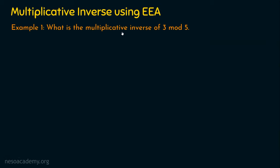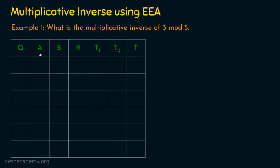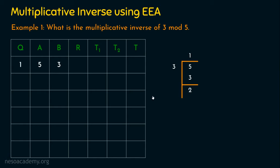Example number 1: What is the multiplicative inverse of 3 mod 5? As mentioned in the previous lecture, a multiplicative inverse exists only when the two values are relatively prime to each other. Since 3 and 5 are relatively prime, we can definitely say there exists a multiplicative inverse. The solution uses 7 columns: Q, A, B, R — from Euclid's algorithm — plus T1, T2, and T. A should take the bigger value, so 5 is placed in A and 3 in B. Performing A mod B: 5 divided by 3 gives quotient 1 and remainder 2, so we fill 1 in Q and 2 in R.